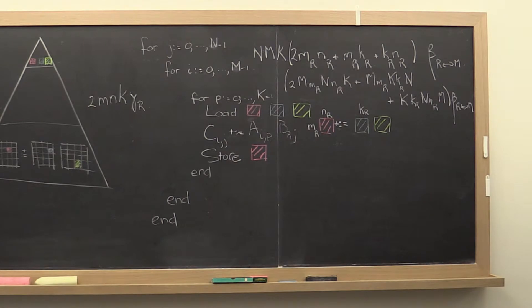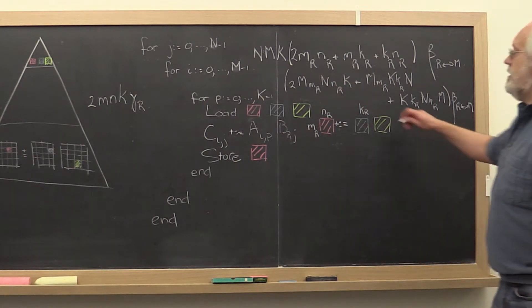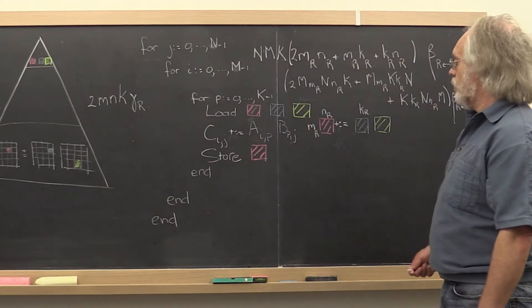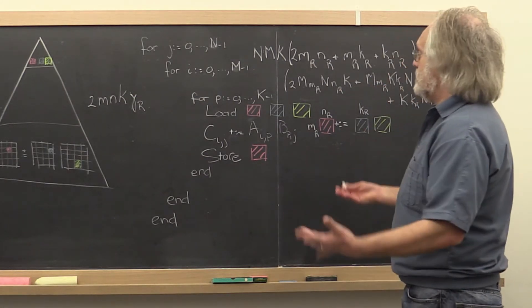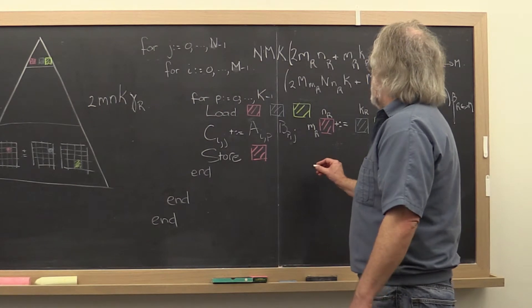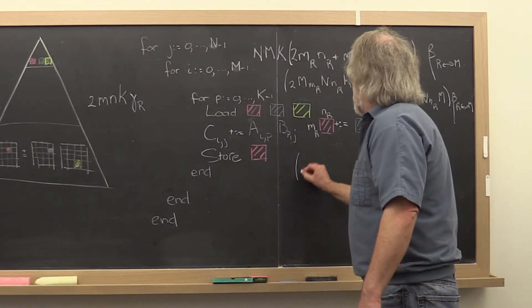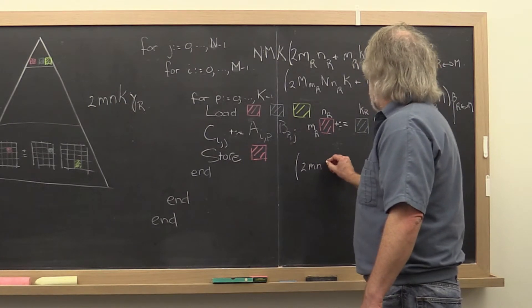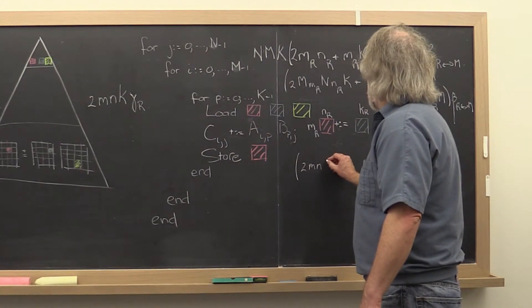And when you write it this way, you see that this is just little m, this is just little n, and so forth. So the total time spent in moving beta around is given by 2 times m times n times, let's see,